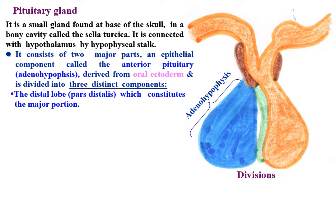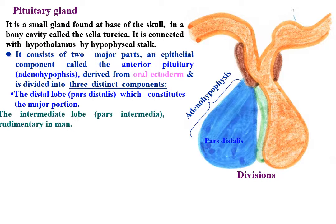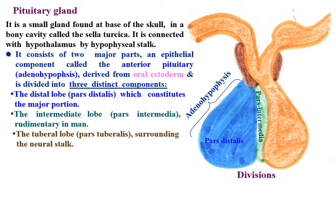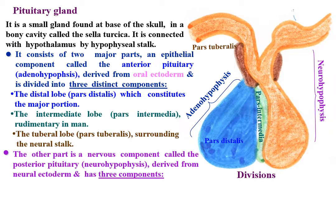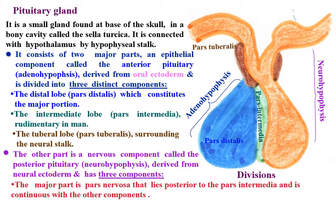The three parts of the adenohypophysis are: the distal lobe, which constitutes the major portion; the intermediate lobe, pars intermedia, rudimentary in men; and the tuberal lobe, pars tuberalis, surrounding the neural stalk. The other part is a nervous component called the posterior pituitary or neurohypophysis, derived from the neural ectoderm, divided into three components: the major part is pars nervosa, the infundibular stalk, and the median eminence.